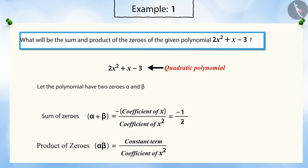Similarly, we know that the product of the zeros of a quadratic polynomial is the ratio of the constant term to the coefficient of x². Substituting the values gives the product of the zeros as -3/2.